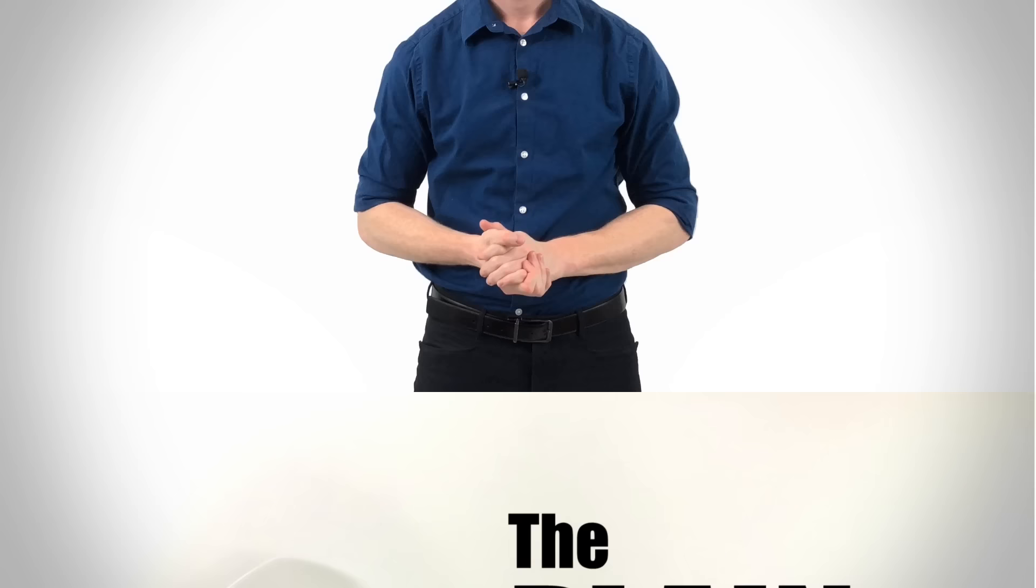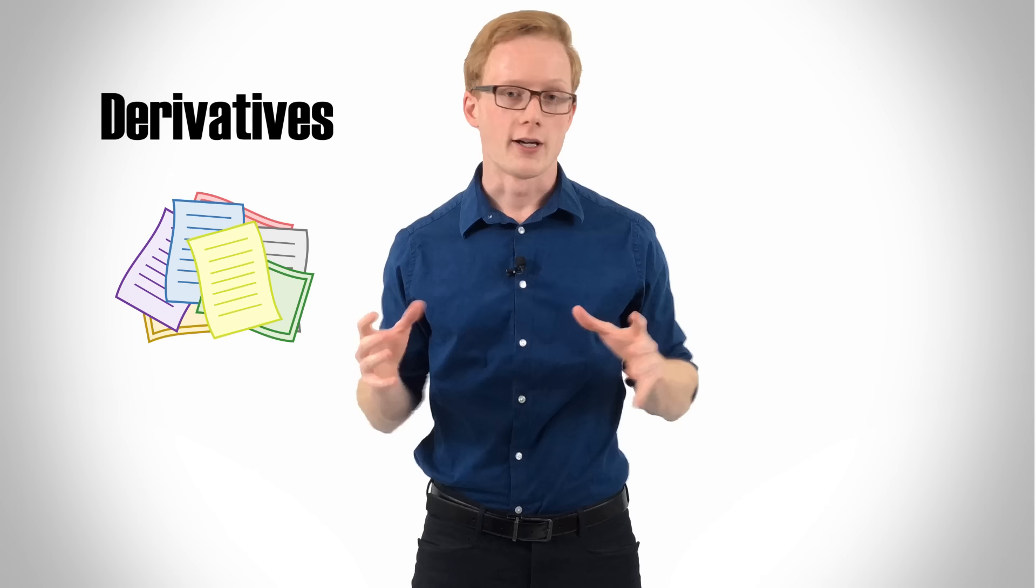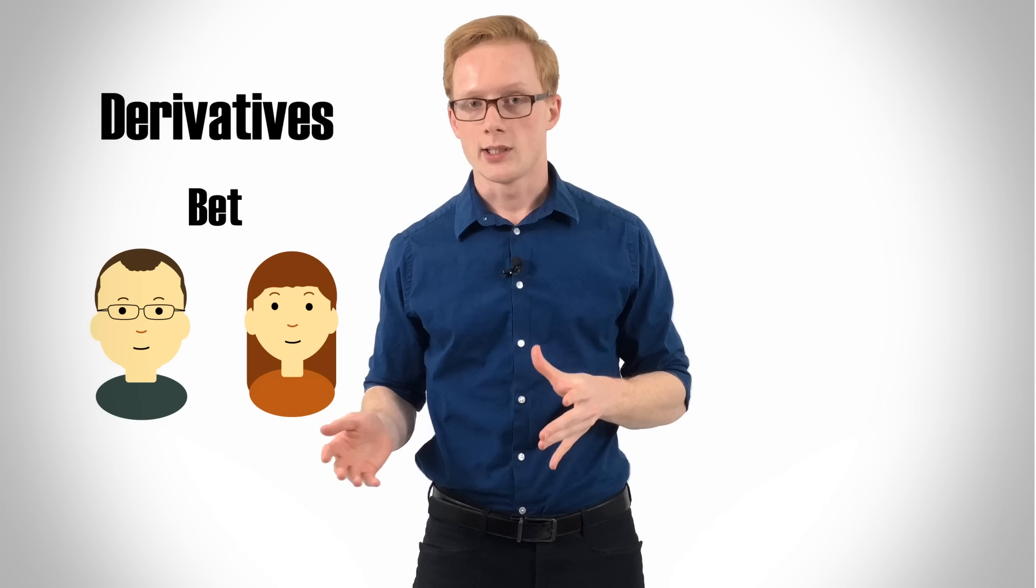Derivatives are pretty self-explanatory in how they work. They are a group of investments that derive their value from an underlying security or rate. You can look at them as a sort of bet between two investors over which direction a certain investment is going to move, and as with most bets, one investor ends up paying the other based on how things turn out.